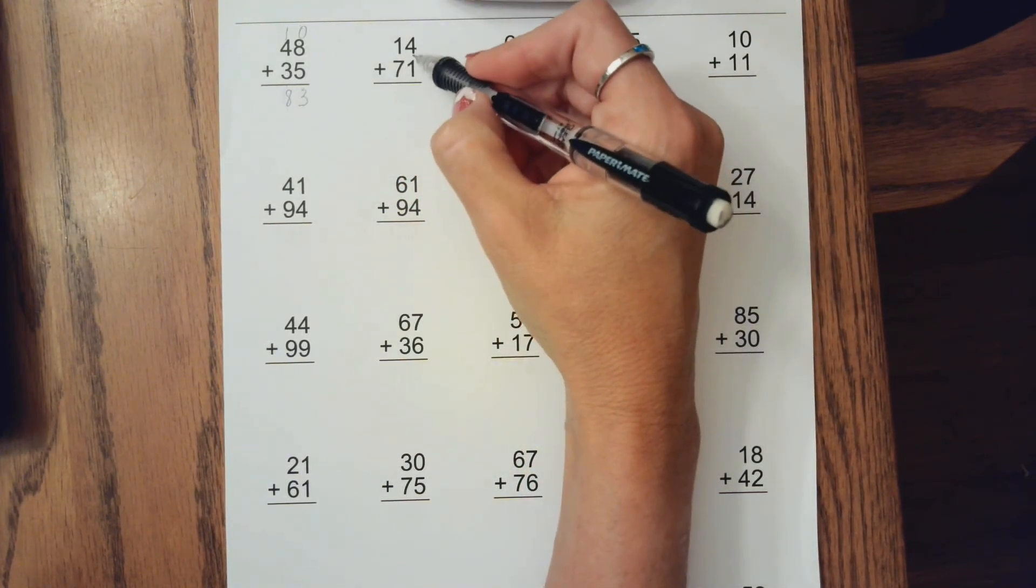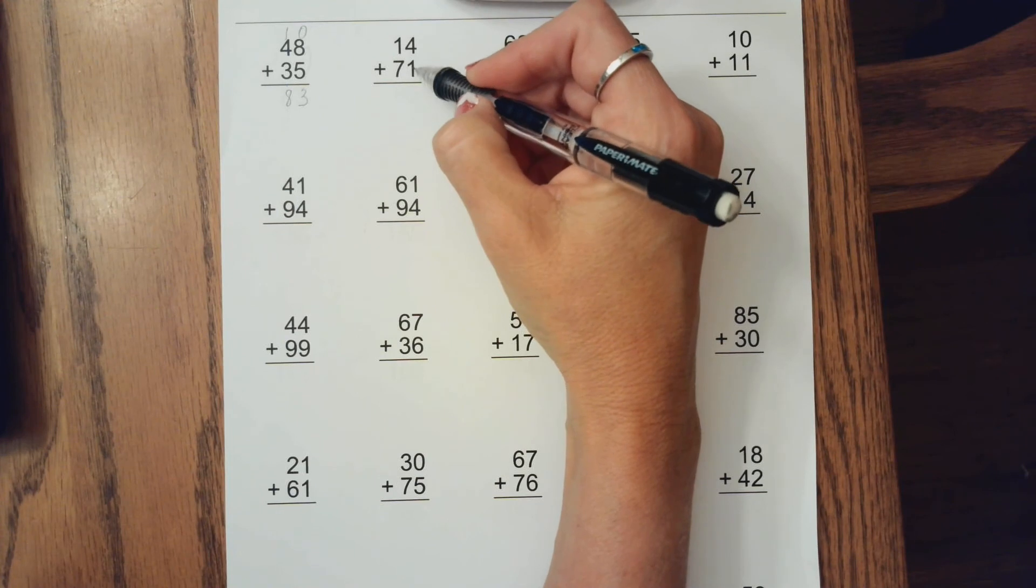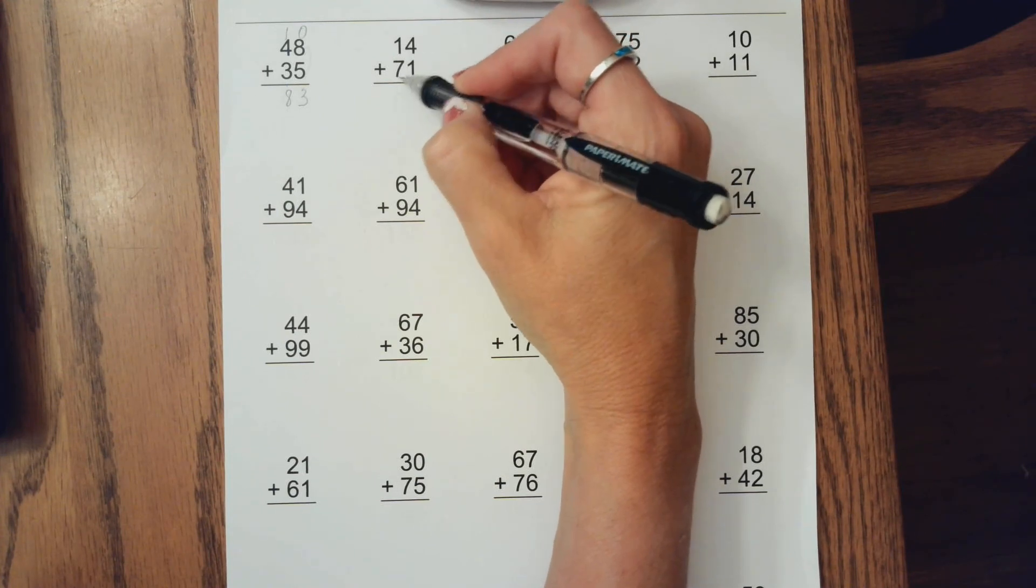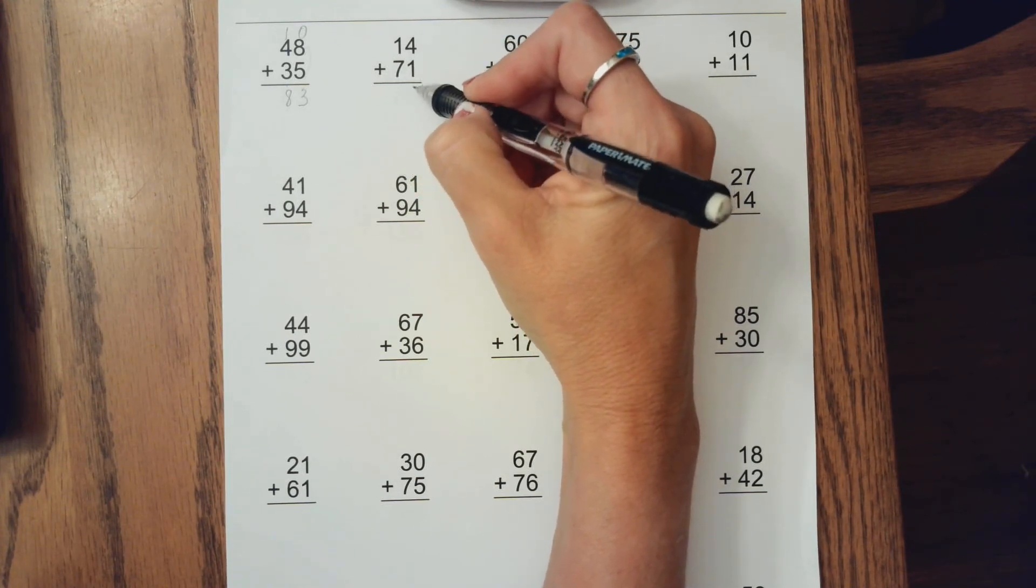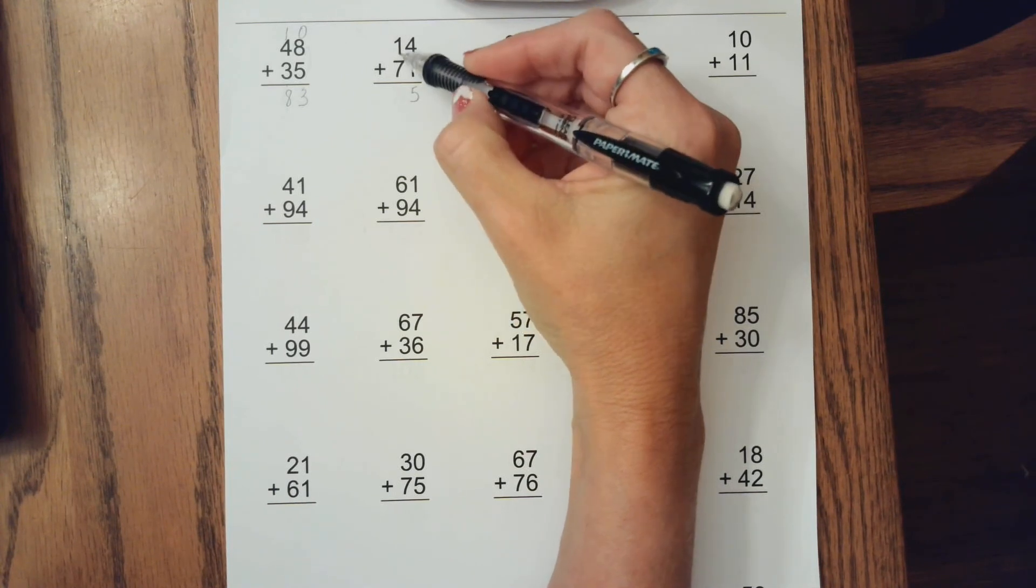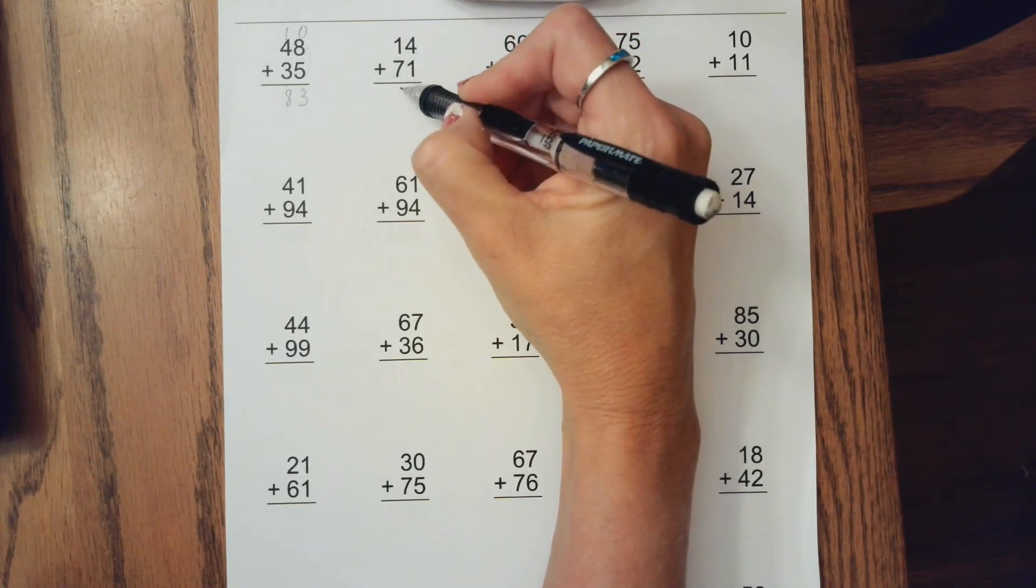The next one we don't have to make a group of 10. 4 plus 1 is 5 and 1 plus 7 is 8.